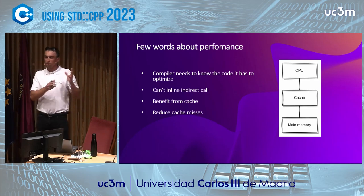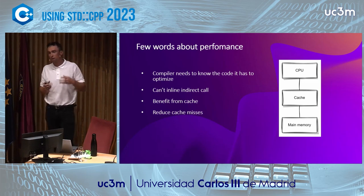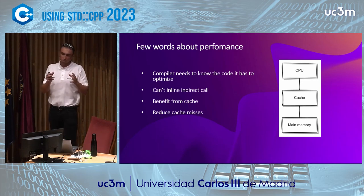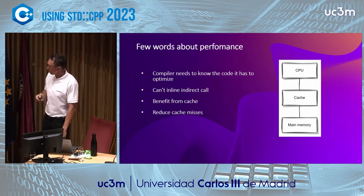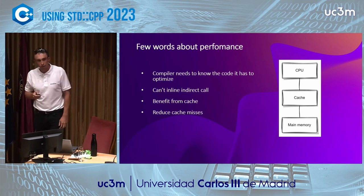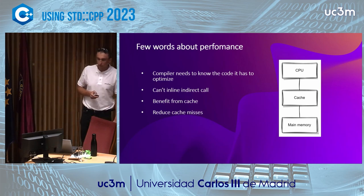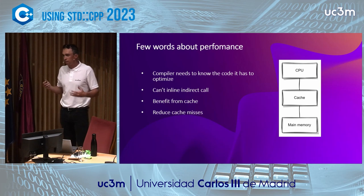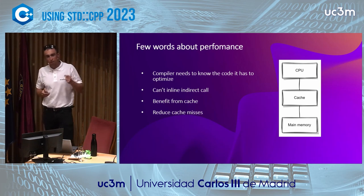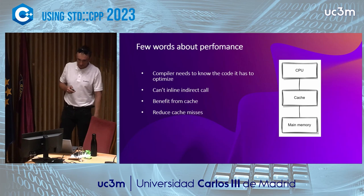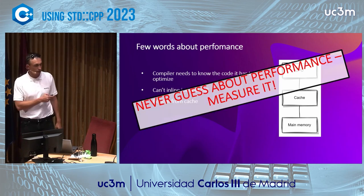Sequential access to contiguous memory is often much faster than random access to distant memory chunks. But performance is a complex topic with many context-dependent answers. If there's one thing I'm sure about performance: don't make assumptions — measure and benchmark.